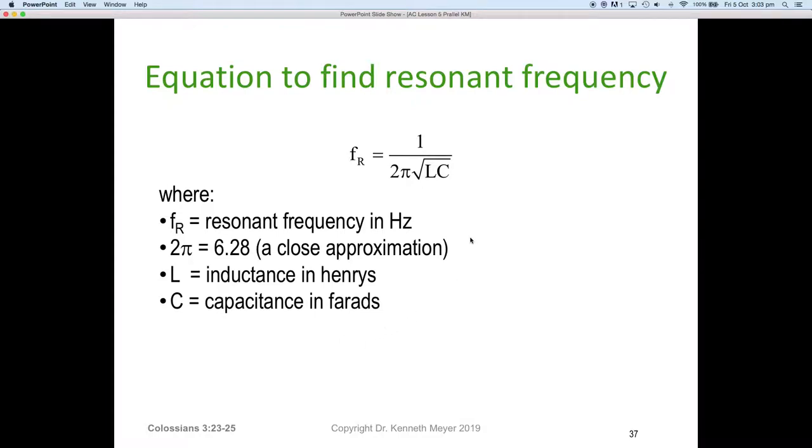So here's the equation that's important for you. Frequency at resonance: FR equals 1 over 2π√LC. It's exactly the same formula that we use for series resonance. I'll point out sometimes they use F subscript O for frequency at oscillation. It's the same thing. So frequency at resonance equals 1 over 2π√LC, where FR is the frequency at resonance, 2π equals 6.28, L is the inductance in henrys and C is the capacitance in farads.